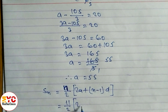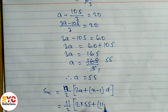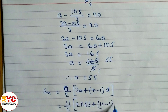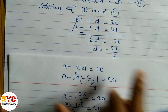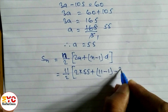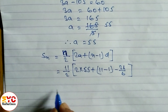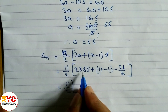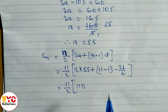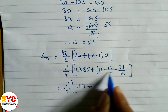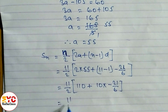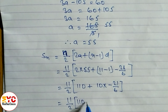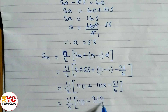So S11 equals 11 by 2 times (2 times 55 plus (11 minus 1) times D). A equals 55 and D equals minus 21 by 6. This gives 11 by 2 times (110 plus 10 times minus 21 by 6), which equals 11 by 2 times (110 minus 210 by 6). Taking LCM 6: 11 by 2 times (660 minus 210) by 6.